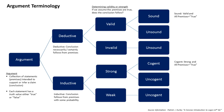Informal arguments are sometimes implicit. That is, the rational structure — the relationship of claims, premises, warrants, relations of implication, and conclusion — is not always spelled out and immediately visible, and must sometimes be made explicit by analysis.